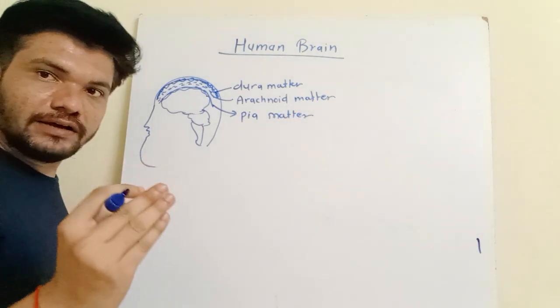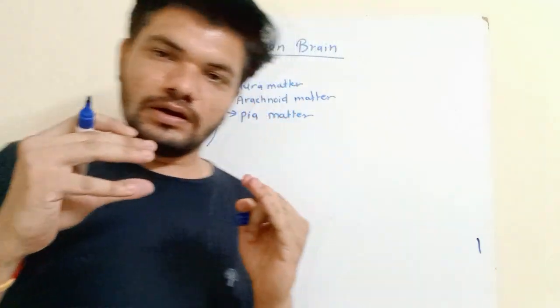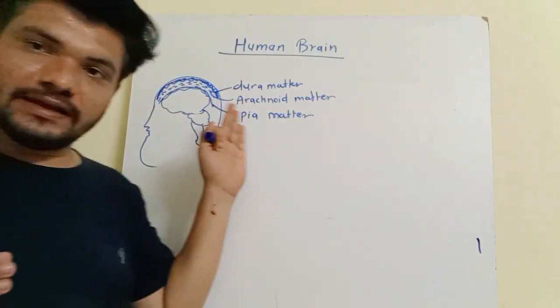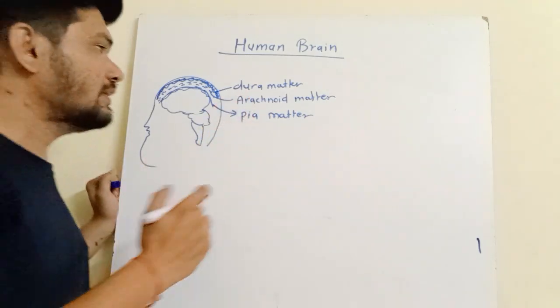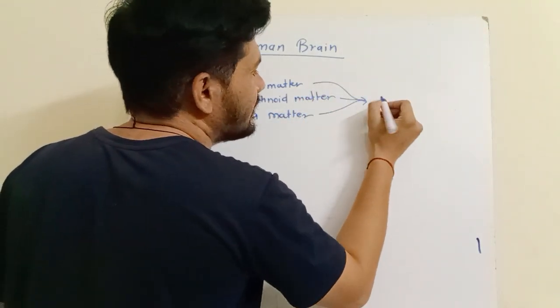So brain is covered and protected by these three layers, and they are collectively called as cranial meninges.